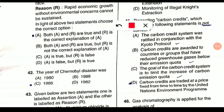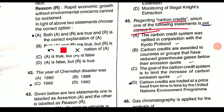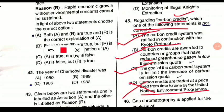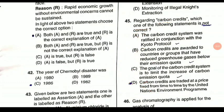Question 45 regarding carbon credits: which statement is not correct? The carbon credit system was ratified in conjunction with the Kyoto Protocol — correct. Carbon credits are awarded to countries or groups that have reduced greenhouse gases below their emission quota — correct. The goal is to limit the increase of carbon emissions — correct. The incorrect statement is that carbon credits are traded at a price fixed by UNEP — this is not correct. So option D is the answer.